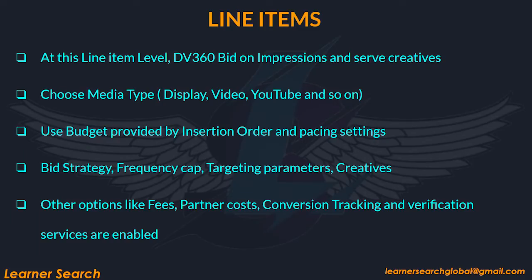This slide shows what you see at the line item level. At this level, DV360 bids on impressions and serves creatives. Line item level helps to choose media type like display, video, YouTube, and so on. It also helps to use the budget provided by insertion orders and pacing settings. You can also manage bid strategy, frequency cap, targeting parameters, and creatives. Other options like fees, partner cost, and conversion tracking are also available at line item level.